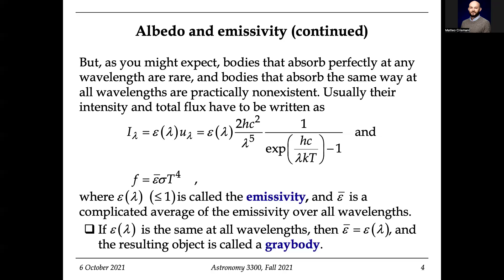If the emissivity is the same at all wavelengths, then the object is called a gray body. A black body would be that all the light comes in and all of that light goes out. If instead light comes in but only half goes out — such that the emissivity is one half — it's a gray body.